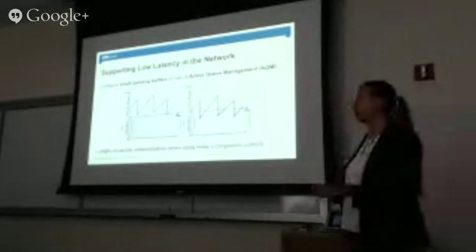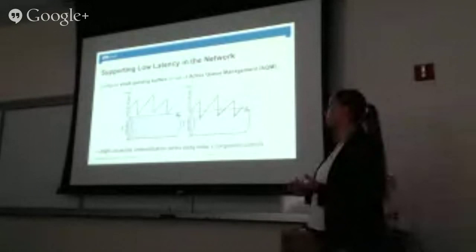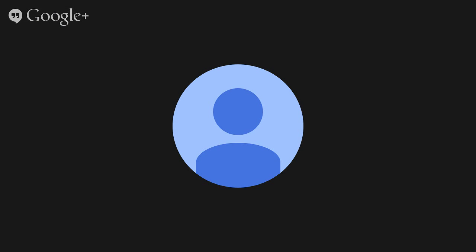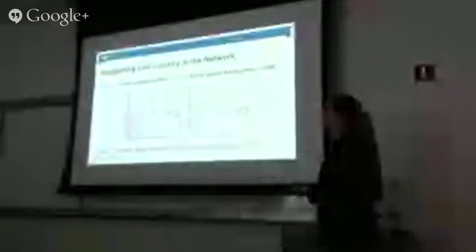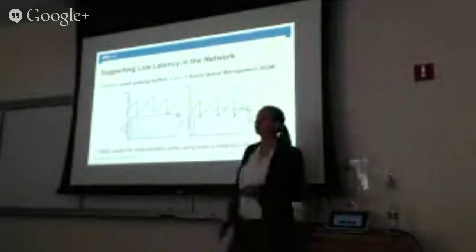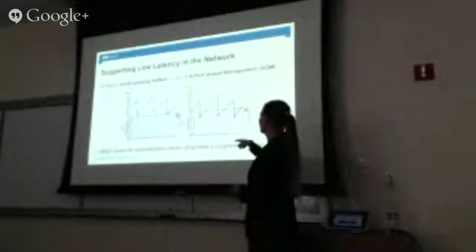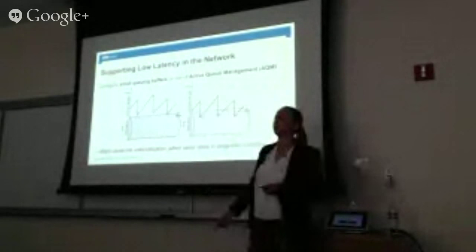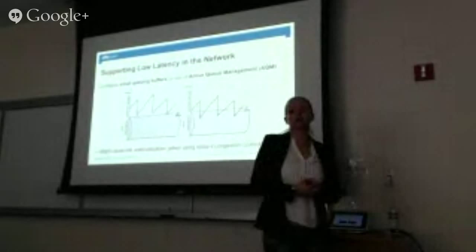If you want to have low latency support in the network, and you use the congestion control you use right now and lower your threshold or your queuing delay, this curve will look different. You will not be able to fully utilize the link anymore because your queue is just empty — you reduce your sending rate way too much.